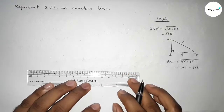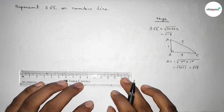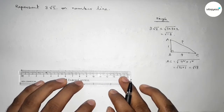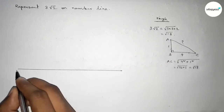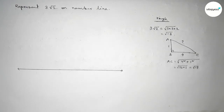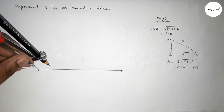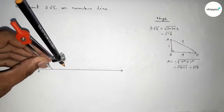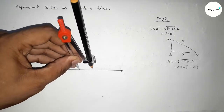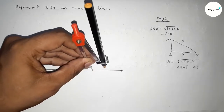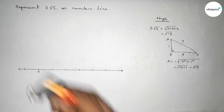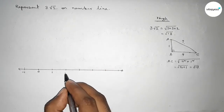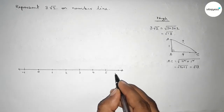So first we have to construct √17 on the number line. Drawing a line of any length with arrow marks on both sides, taking zero as the starting point. Using a compass to mark unit lengths on the line, marking points: −1, 1, 2, 3, 4, 5, 6.